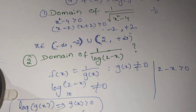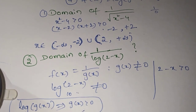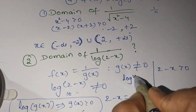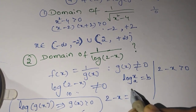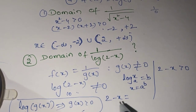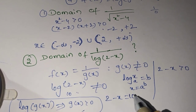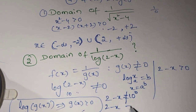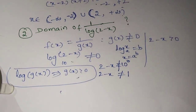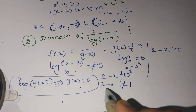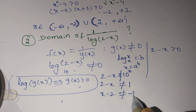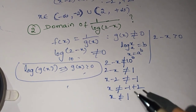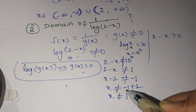We have two conditions. For the first condition, log(2 minus x) ≠ 0. Using log x base a = b means x = a to the power b, so 2 minus x = 10 to the power 0, which equals 1. Therefore 2 minus x ≠ 1. Rearranging: x minus 2 ≠ minus 1, so x ≠ minus 1 plus 2, giving x ≠ 1. So 1 is not included in the interval.